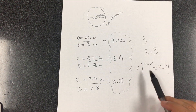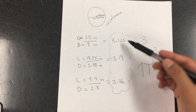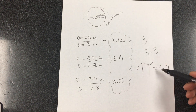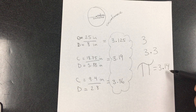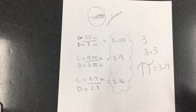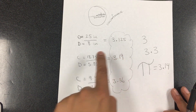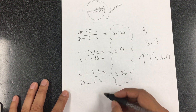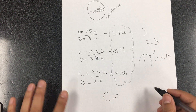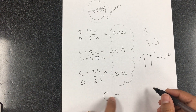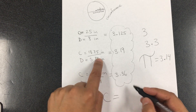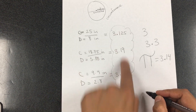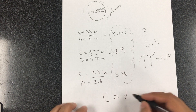They decided to use a symbol for pi, which is 3.14. So 3.14 multiplied by the diameter gives me the circumference, and that's where that formula comes from. Circumference is equal to the diameter multiplied by the value of pi.